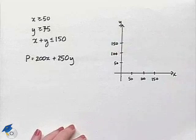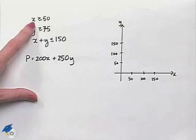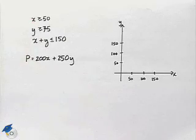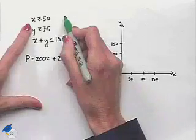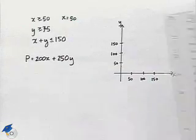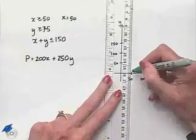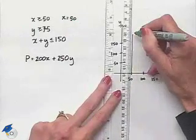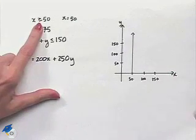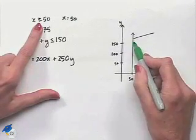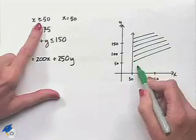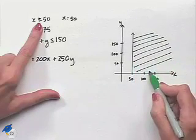Now let's begin by graphing the constraint that X is greater than or equal to 50. We'll start by graphing the equation X equals 50, which would be a vertical line. Since we want our X value to be greater than or equal to 50, we'll end up shading to the right of that vertical line to give us values where the X would be greater than 50.